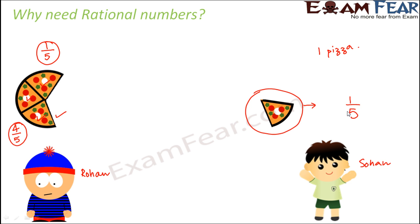But Sohan has borrowed this pizza from Rohan, saying: you give me one slice now, and I will return you one slice when I get another pizza later. On that condition, Rohan gave him one slice. So if I ask you what is Sohan's balance right now — initially Sohan had one complete pizza, then after eating it his balance was zero. Now that he has borrowed one-fifth of a pizza from Rohan, his balance is minus one-fifth, because he has to return this slice to Rohan. Since it was borrowed, it is basically minus one by five.